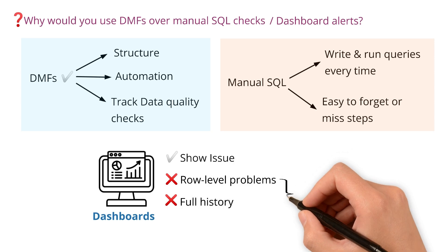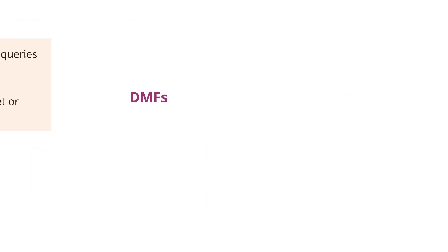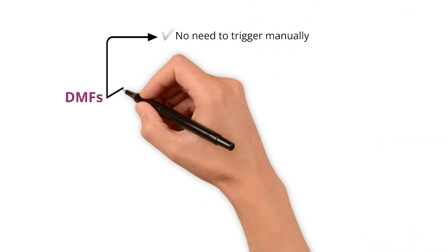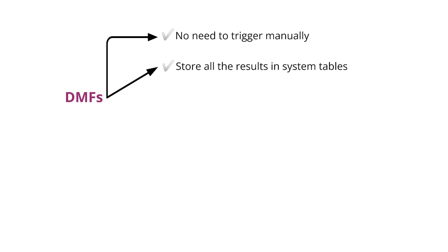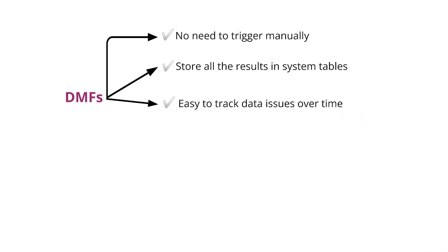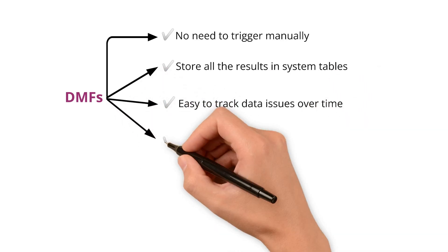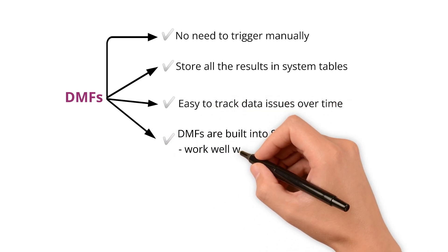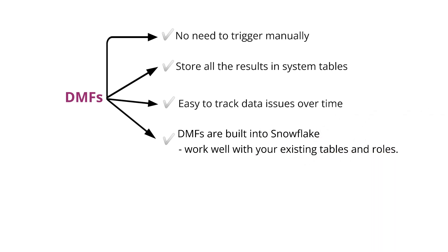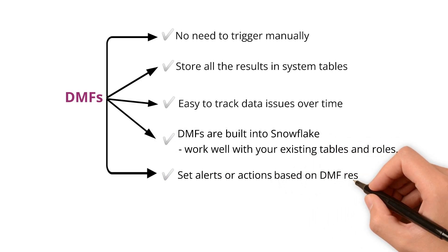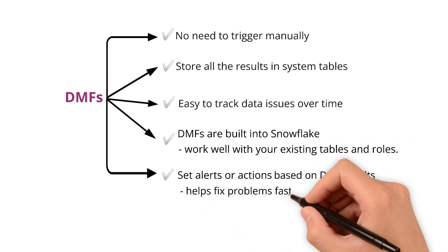DMFs solve this by running automatically on a schedule — you don't need to trigger them manually. They also store all results in system tables, including which rows failed and when. This makes it easy to track data issues over time and even spot patterns. DMFs are built into Snowflake, so they work well with your existing tables and roles. You can even set alerts or actions based on DMF results, which helps fix problems faster.